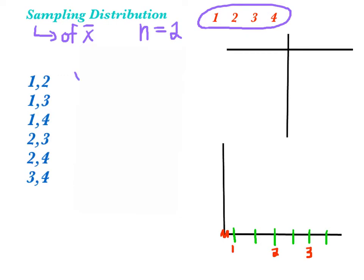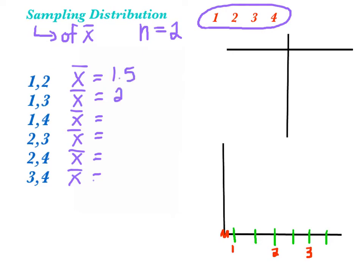Let's compute the mean for every single one of these. We want to find an x-bar for every single one of our samples. We get 1½, 2, 2½, 2½, 3, and 3½.